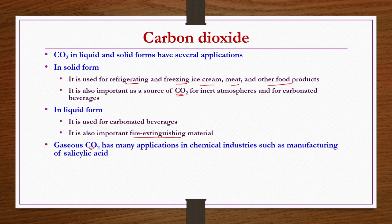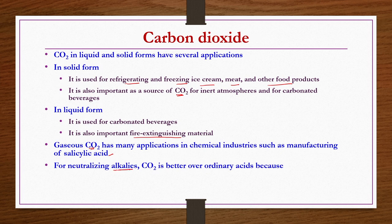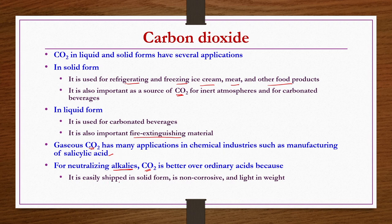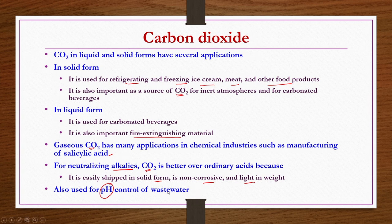Gaseous CO2 also has applications in chemical industries, such as in the manufacturing of salicylic acid. CO2 can also be used for neutralizing alkalis — it is a better option than ordinary acids because in solid form it is non-corrosive and light in weight. It is also used for pH control in wastewater treatment; nowadays almost all industries use CO2 for pH control of their industrial wastewater.